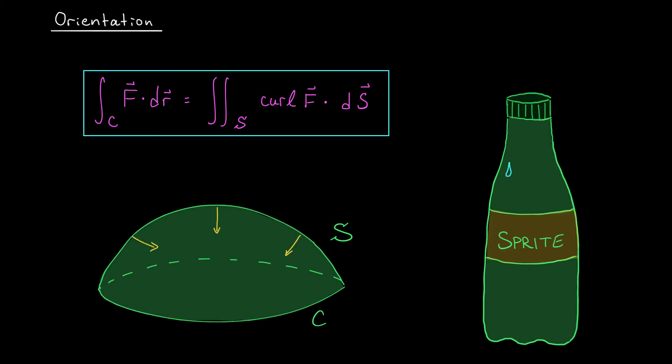What if instead our surface S were oriented downward or inward? Well, again, we're going to imagine a little guy walking along the boundary curve C and his head is going to be in the direction of our normal vectors. So this time his head is actually pointing downward. He's on the underside of our boundary curve. Still, he wants to keep the inside of the curve to his left.